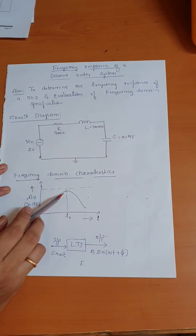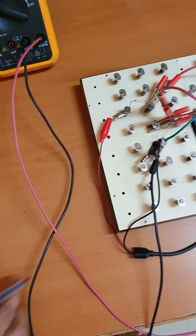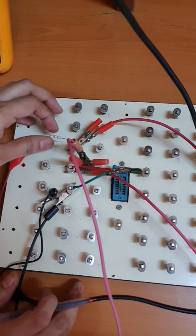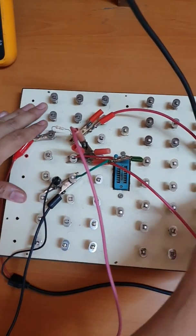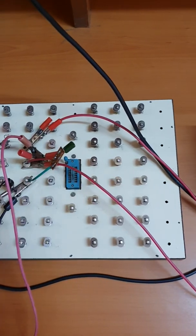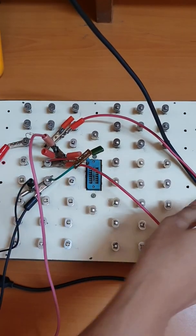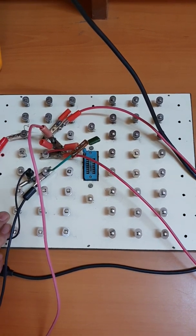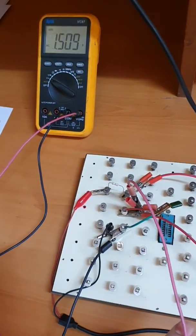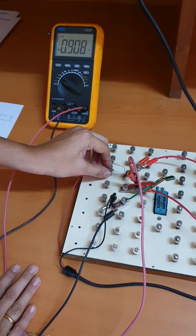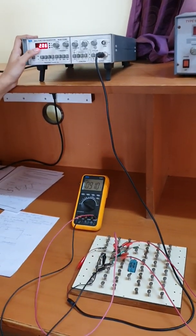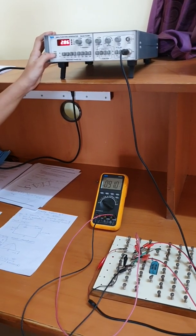Now we will see the experimental setup. Here we have taken a resistor of 390 ohms — you can also use a decade resistance box. We have a decade inductance box and a 0.1 microfarad capacitor. These components are all connected in discrete form. One multimeter is connected in parallel across the capacitor, and the circuit is connected in series with the signal generator providing 2 volts peak-to-peak, which has already been set.